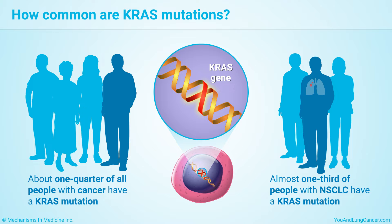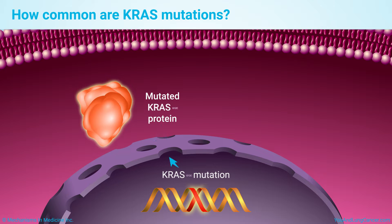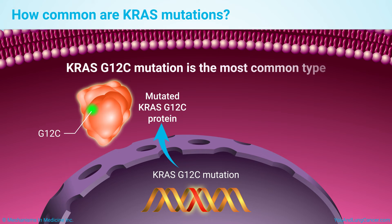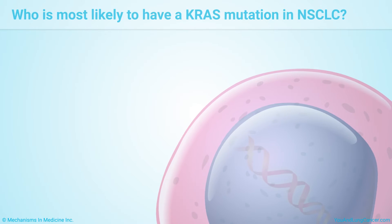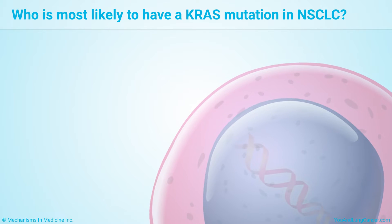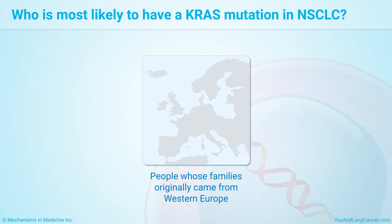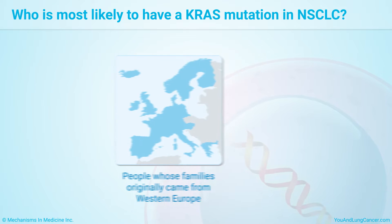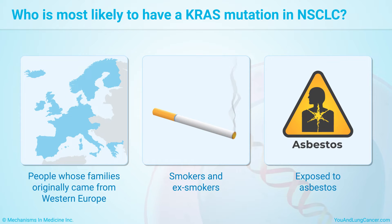Most of these people have adenocarcinoma of the lung. There are several types of KRAS mutation, but the KRAS G12C mutation is the most common — about half of people with a KRAS mutation have this one. In non-small cell lung cancer, KRAS mutations are more common in people whose families originally came from Western Europe. They are also more common in people who smoke now, used to smoke, or were exposed to a mineral called asbestos.